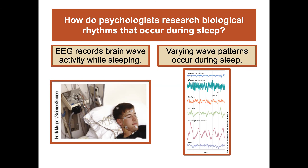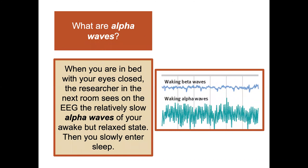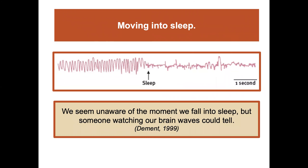How do psychologists research the rhythms that occur during sleep? They use EEGs — electroencephalograms — which record brain wave activity while sleeping. Alpha waves are seen when you're in bed with your eyes closed and relaxed. A researcher monitoring the EEG would see those relatively slow alpha waves of your awake but relaxed state. Then you slowly enter sleep. We seem unaware of the exact moment when we fall asleep, but if someone was monitoring your EEG, they would be able to tell.